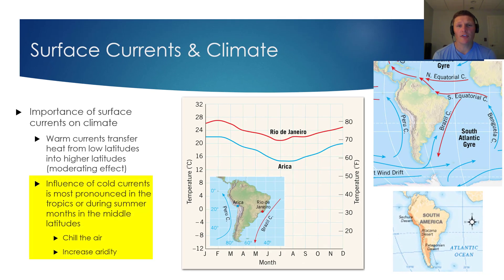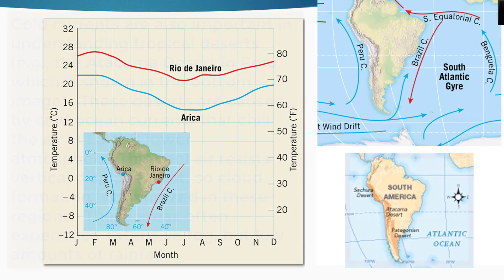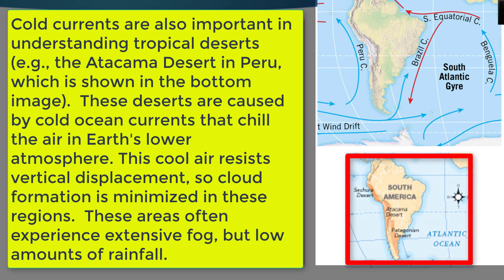Also worth noting is that cold currents don't just chill the air in the regions surrounding them — they're also responsible for increasing the dryness in their regions. Look at the map shown in the bottom right portion of this slide. Along most of the western coast of South America, we see deserts. And it's not a coincidence that the Peru current, which is a cold current, runs along most of the western coast of South America. The arid conditions occur because cool air resists vertical displacement — cool air doesn't want to move upwards into our atmosphere — and because of this, cloud formation and precipitation is minimized along the west coast of South America.